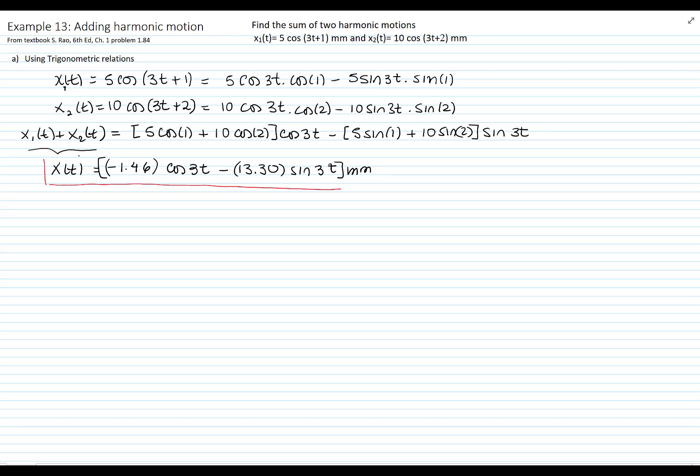So this is the result of adding the 2 harmonic motions. That's one way of presenting the answer. The other way is with only 1 cosine.